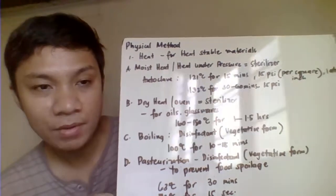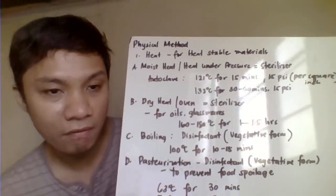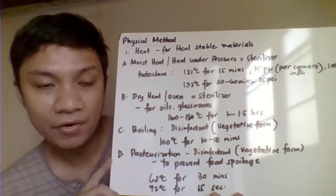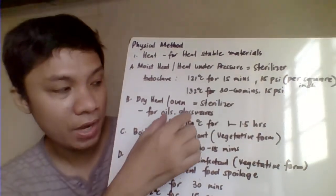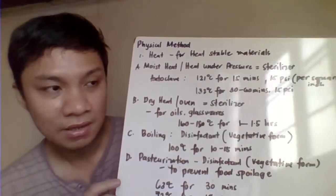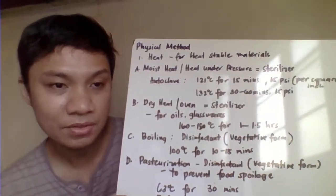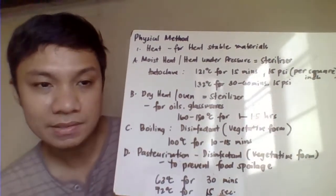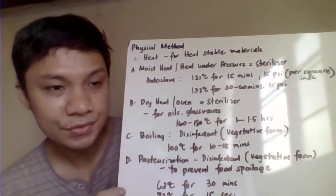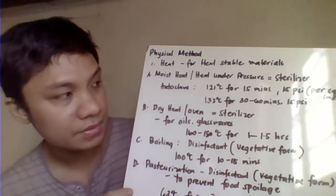Dry heat, in the form of an oven, is ideal for oils and glassware. The dry oven is also a sterilizer. The temperature used is 160 to 180 degrees Celsius for 1.5 to 3 hours.